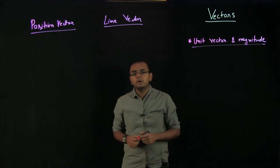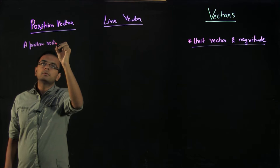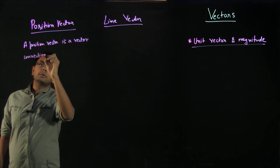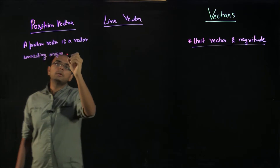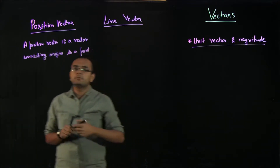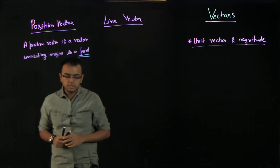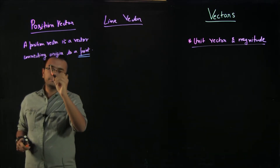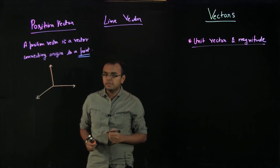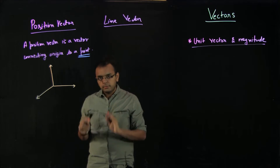A position vector is a vector connecting origin to a point. As the name suggests, this position vector is about the position of one point. Vectors will always be in three dimensions, which will be really helpful for you in the next chapter of three-dimensional geometry. That is why it is important to understand position vectors, line vectors, and unit vectors. Let us initially focus on position vector.